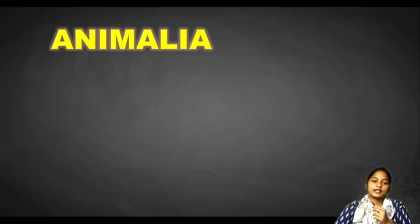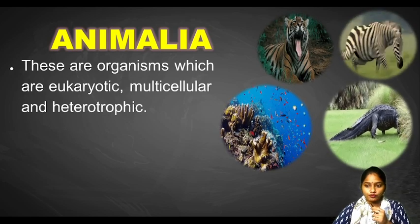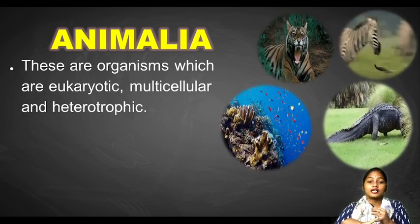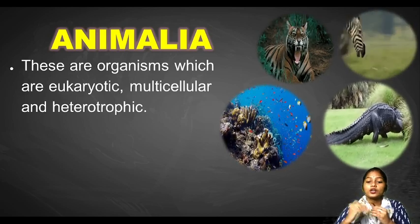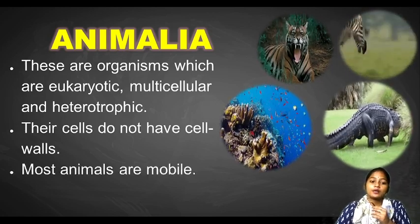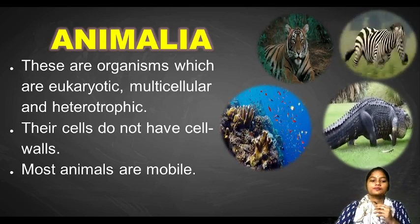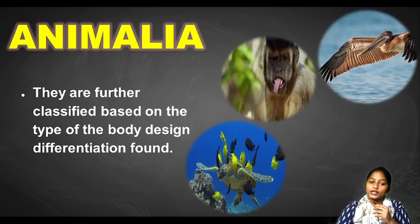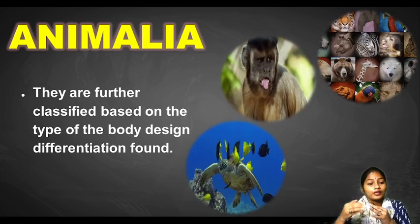Animalia — these are organisms which are eukaryotic, multicellular and heterotrophic. Plants are autotrophic because they can make their own food, but these animals are eukaryotes and multicellular — they have more than one cell. They are heterotrophic, meaning they cannot make their own food; they depend on others for their food. Their cells do not have cell walls, and most animals are mobile — meaning they can move from one place to another. They are further classified based on the type of body design differentiation found.